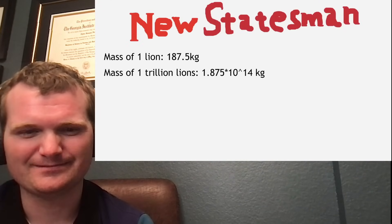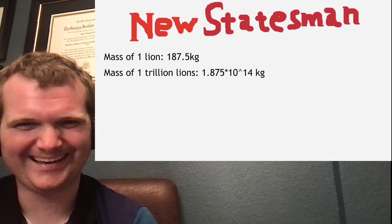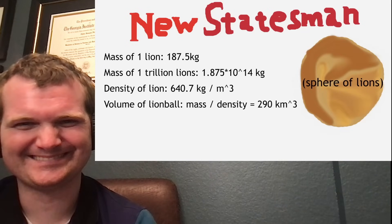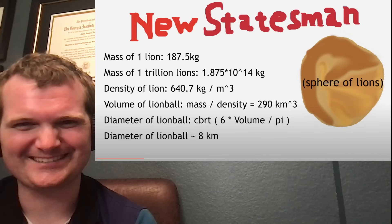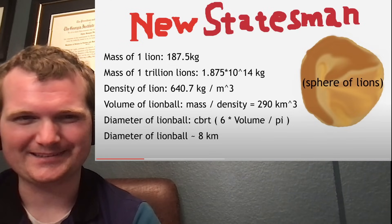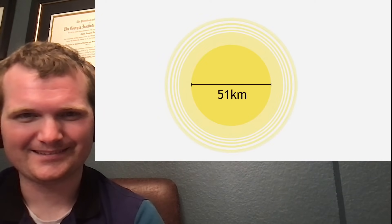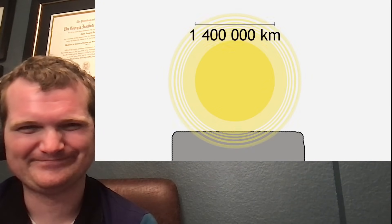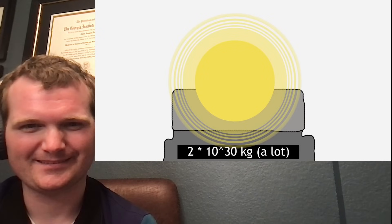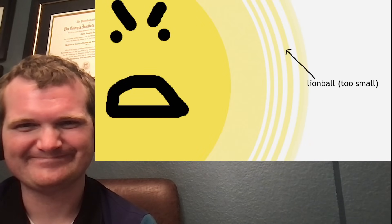But the lions have a numerical advantage, right? Do they? Not really. One trillion lions would weigh 1.875 x 10^14 kilograms, be 290 cubic kilometers in volume, and have a diameter of 8 kilometers. A sphere of lions? That's actually kind of terrifying. What is this, an animal planet? That means that this lion sphere is about twice as wide as Central Park and nowhere near as pretty. The sun, on the other hand, is about 1.4 million kilometers across and has a mass of about 2 x 10^30 kilograms, which is 10 quadrillion times as massive as the lion ball.